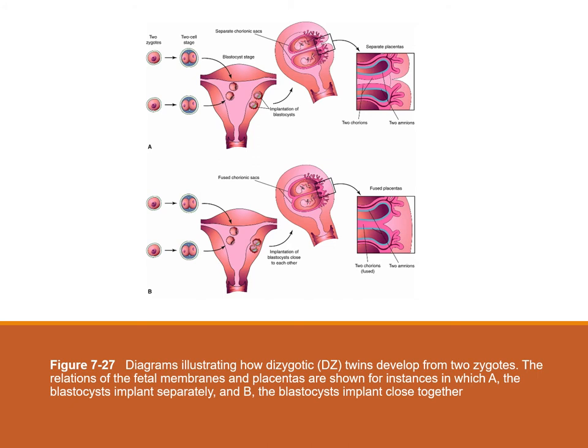This figure shows how dizygotic twins develop from two zygotes, and it also shows the relationships of the fetal membranes and placenta. In figure A, the blastocysts implant separately, while in figure B, the blastocysts implant very close to each other. In both cases there are two amnions and two chorions. However, in figure B, the placentas are usually fused because they implant very close together.